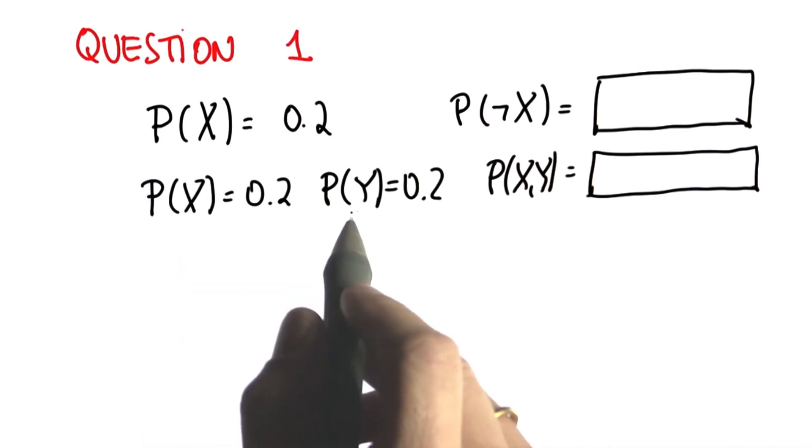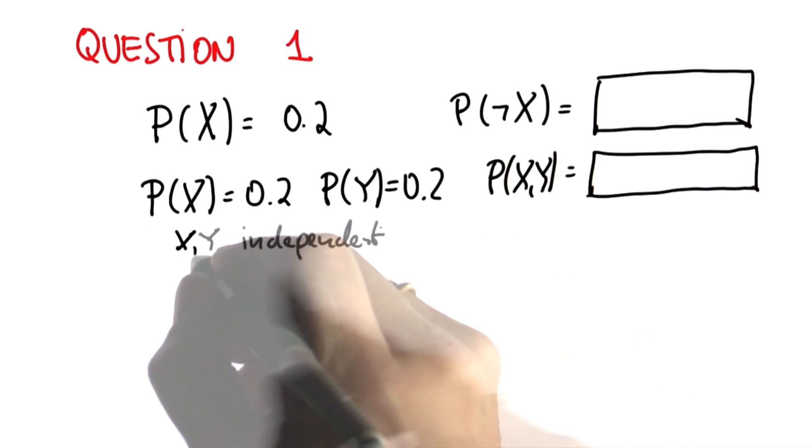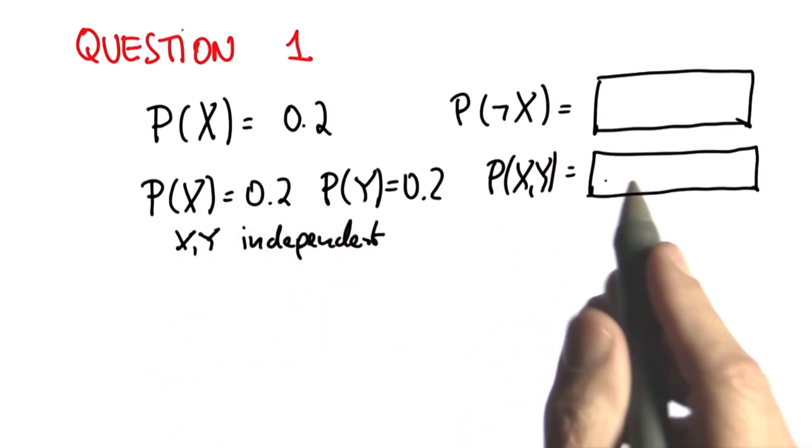We have two random variables, X and Y, whose probability individually is 0.2. And X and Y are independent. What's the probability of the joint X, Y?